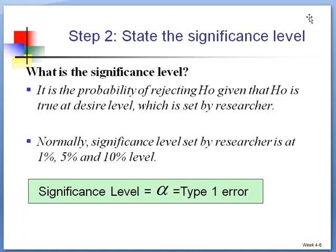Step 2: State the significance level. Normally, the significance level is given in the questions. Please read the question carefully in the exam time. What is significance level? Significance level is the probability of rejecting the null hypothesis given that the null hypothesis is true, which is said by the researcher. Normally, the significance level setting is 1%, 5%, or 10% significance level.